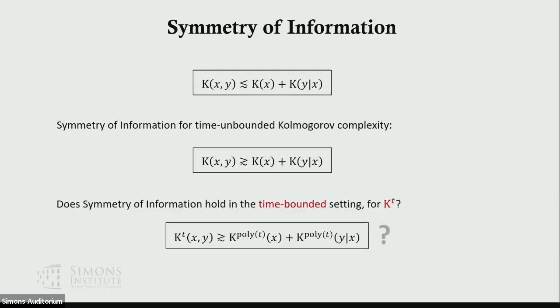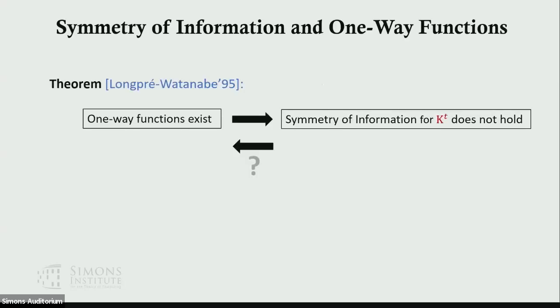The question here is: does symmetry of information hold in the time-bounded setting, say for kt? Unlike the coding theorem, we know that symmetry of information is unlikely to hold for kt. That's because we know that if one-way functions exist, then symmetry of information for kt fails.